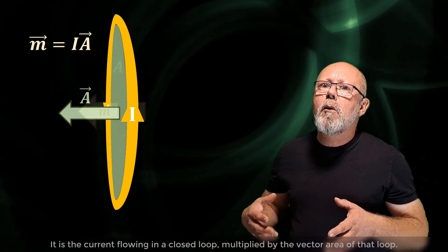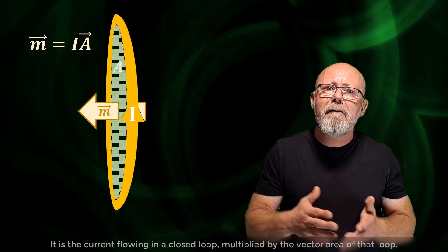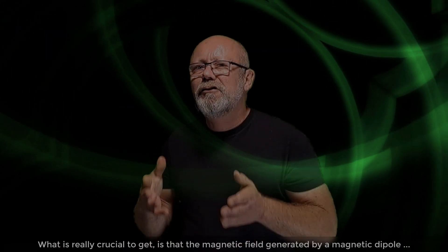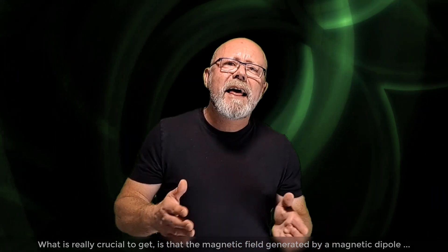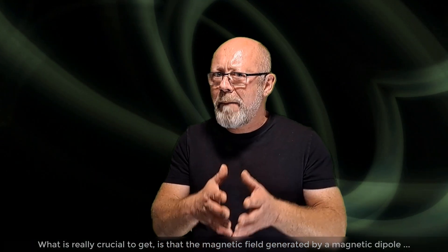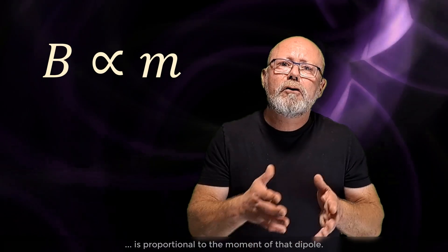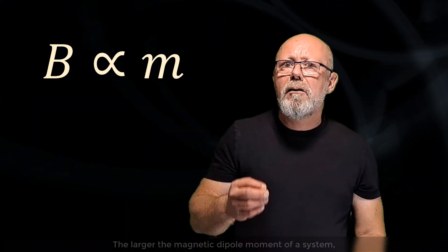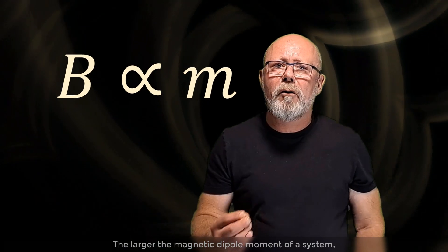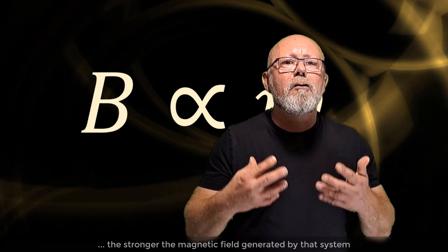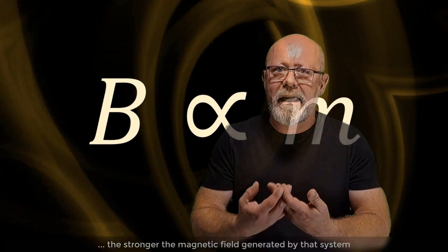It is a current flowing in a closed loop multiplied by the vector area of that loop. What is really crucial to get is that the magnetic field generated by a magnetic dipole is proportional to the moment of that dipole. The larger the magnetic dipole moment of a system, the stronger the magnetic field generated by that system.